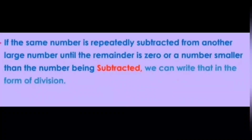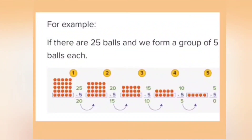we can write that in the form of division. For example, if there are 25 balls and we form a group of five balls each, the number five has been repeatedly subtracted five times. We can say that the number five has been subtracted five times from 25.